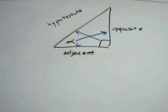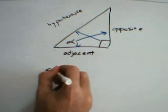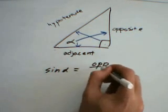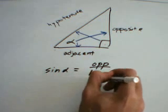The sine ratio, the sine of this angle, is equal to the length of its opposite side divided by the length of the hypotenuse.